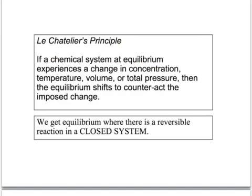The theory behind this isn't actually on the GCSE specification — it's on the A-level one — but it's Le Chatelier's principle. What he said is that if a chemical system at equilibrium experiences a change in concentration, temperature, volume or pressure, then the equilibrium will shift in order to counteract that imposed change. This only happens in reversible systems where we've got a closed system, in other words where none of the reactants or products are allowed to escape.